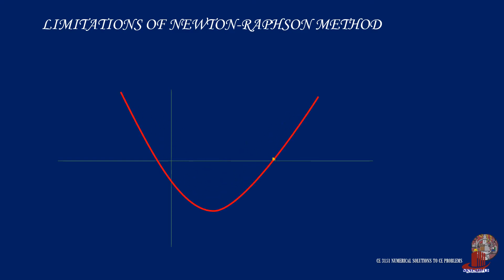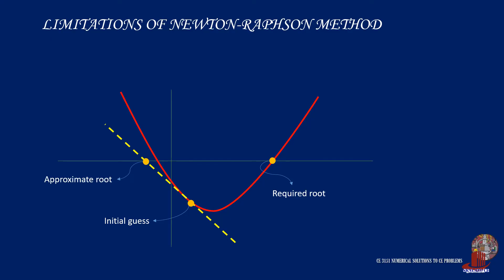Consider a function where we want to find a specific root. We make an initial guess, and by drawing the tangent line, we notice that it is taking us away from the required root. This is a limitation where the initial guess was taken on the other side of the stationary point.